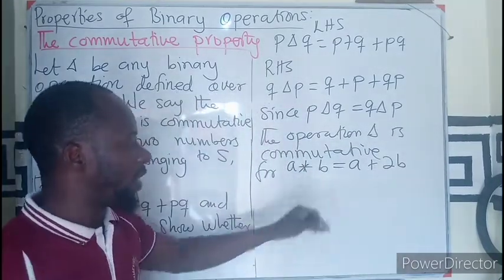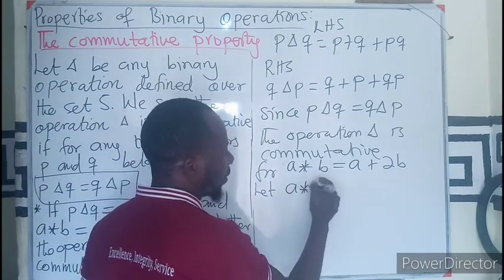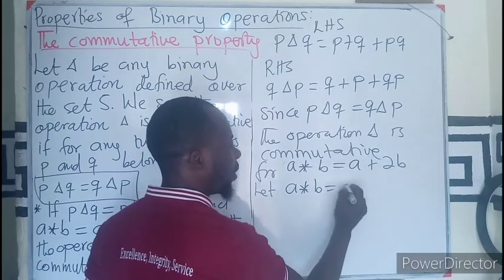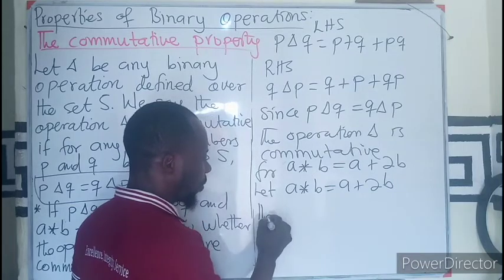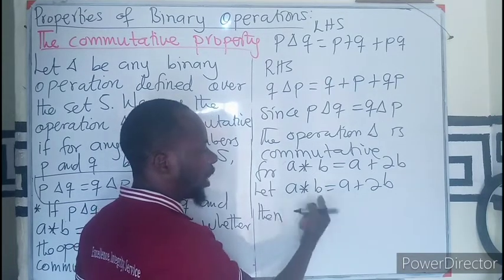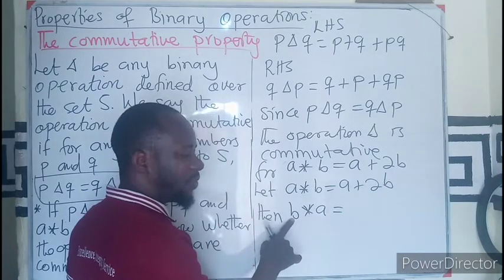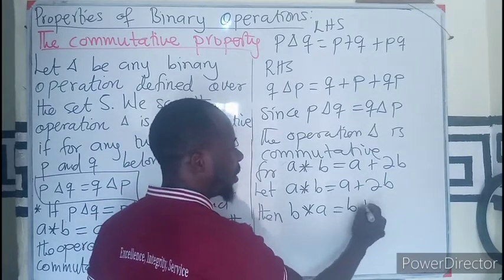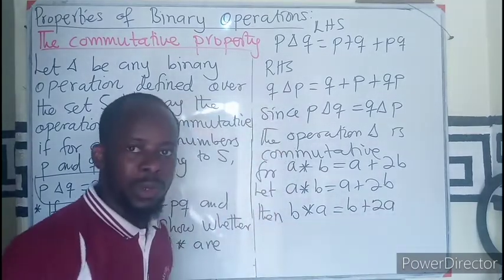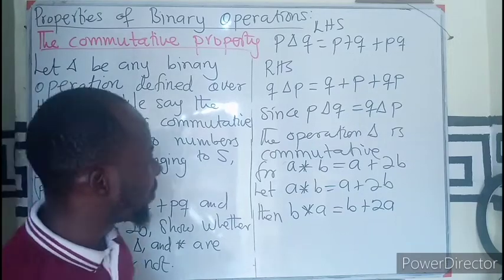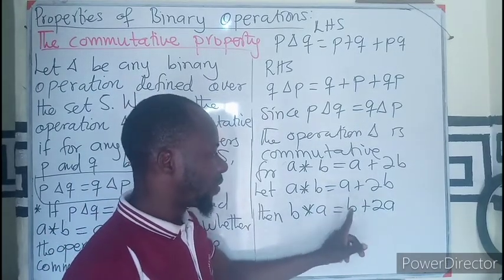So for this, let's consider A * B to be A + 2B. Then let's take the change of order, B * A, to be the same as the first number B plus twice the second number A. So now let's compare our left hand side with the right. This is A plus 2B, this is B plus 2A.